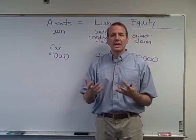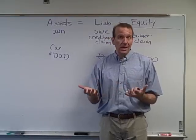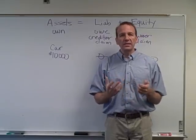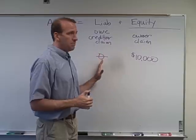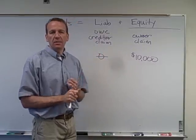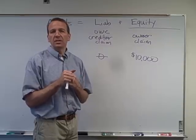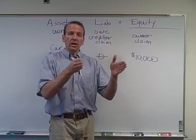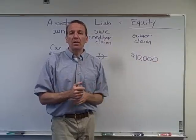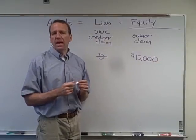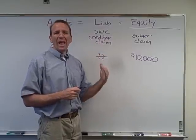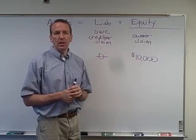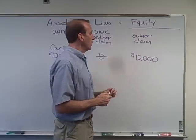Other asset examples include cars, buildings, land, and supplies — all things that we own. For liabilities, examples would be money owed to the bank, money owed to the utility company, or money owed to our employees. Employees often work and get paid a week or two later — that's called wages payable or salary payable. Whenever you see the word 'payable,' that means a liability. Accounts payable means we bought something on credit.